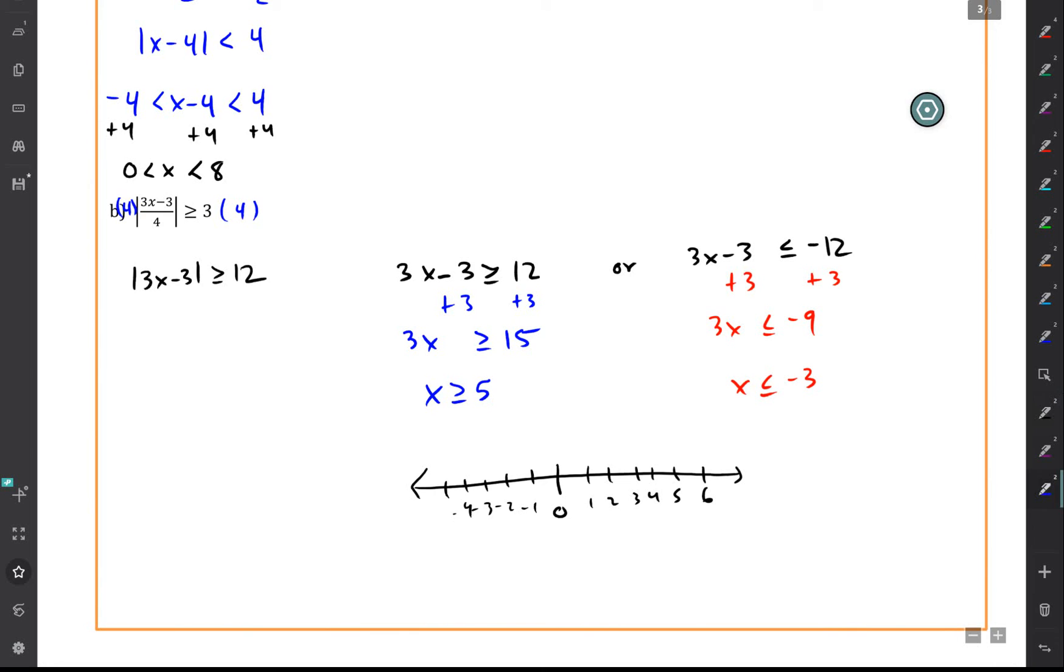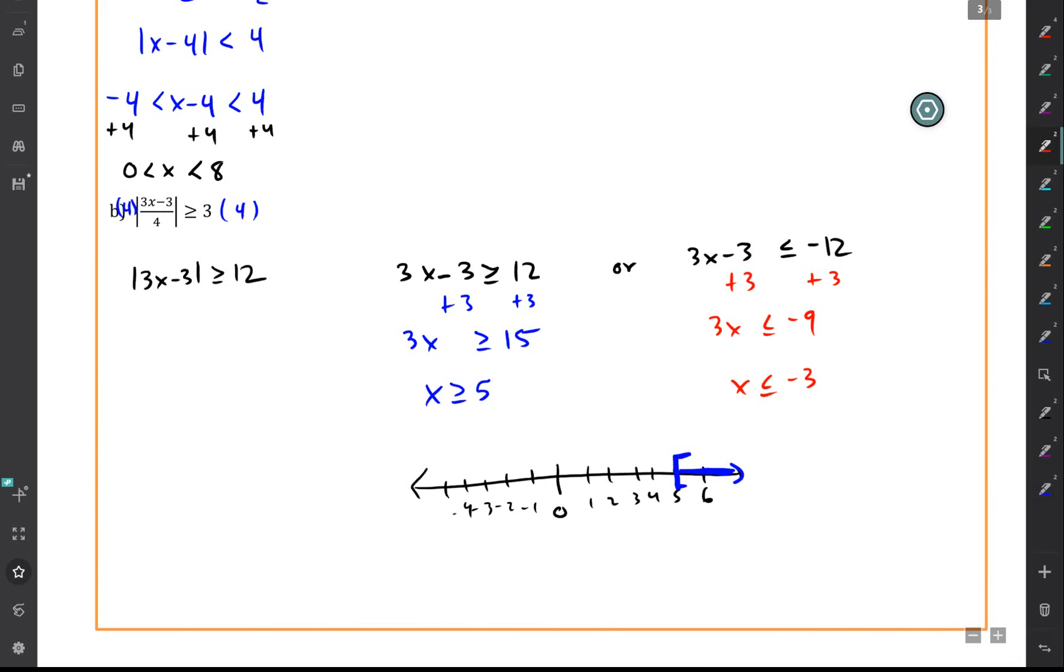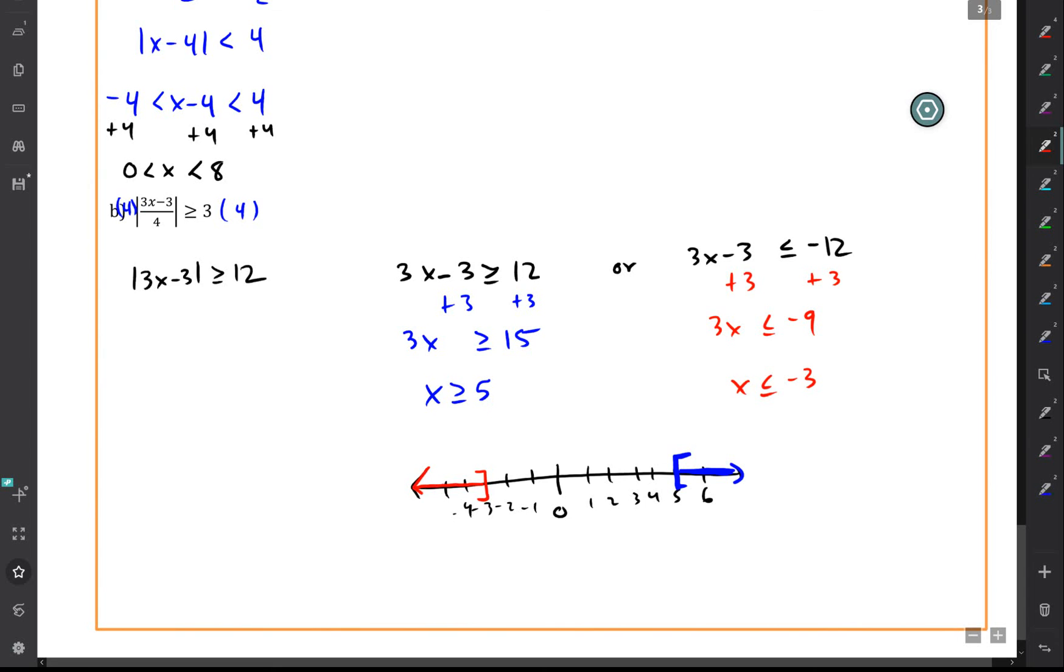So first, x greater than or equal to 5 is all points to the right of 5 on the number line. And since it's greater than or equal to, I'm going to use a square bracket at 5. And then all the points that are less than or equal to negative 3 are the points to the left of negative 3 on the number line.